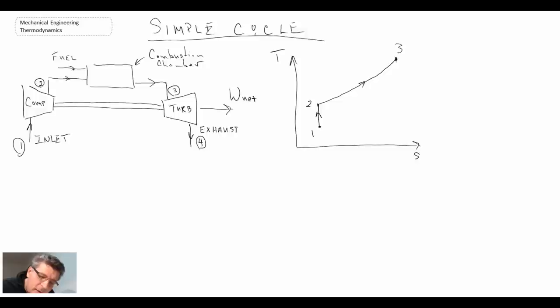So here we have QN. So that takes us to state three. We then go through isentropic expansion taking us to state four. And finally we have the heat rejection process, which is in reality our exhaust cycle. However we will model that as being a heat rejection process.